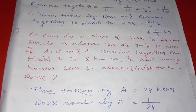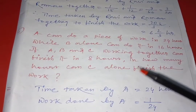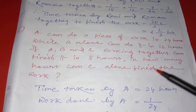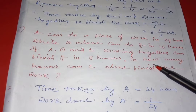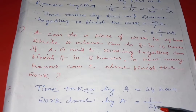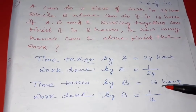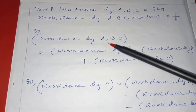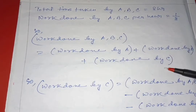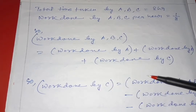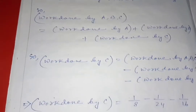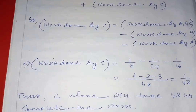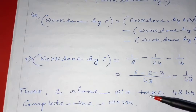Go through the question twice. A can complete in 24 hours, B alone in 16 hours, and A, B, C together can complete it in 8 hours. Time taken by A: 24 hours, work done by A: 1 by 24. Time taken by B: 16 hours, work done by B: 1 by 16. Total time taken by A, B, C: 8 hours, so work done by A, B, C per hour is 1 by 8. Work done by A, B, C together equals work done by A plus B plus C. We need to find only work done by C, which is work done by A+B+C minus work done by B minus work done by A. So work done by C equals 1 by 8 minus 1 by 24 minus 1 by 16, which equals 1 by 48. That means C alone will take 48 hours to complete the work.